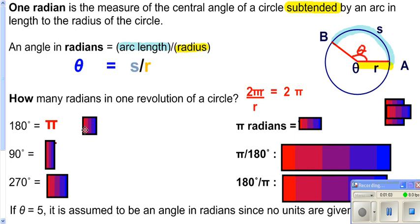90 degrees is a quarter of your circle. A quarter of the way around, a quarter of your 2π is π over 2. 270 is three quarters of the way around, so it's three quarters of 2π. 3 fourths of 2π is 2π over 3.